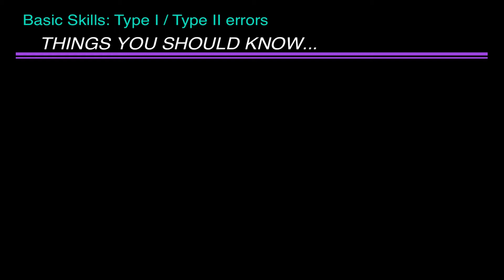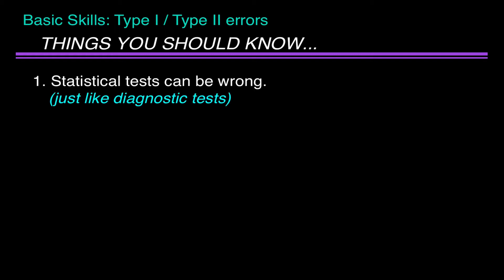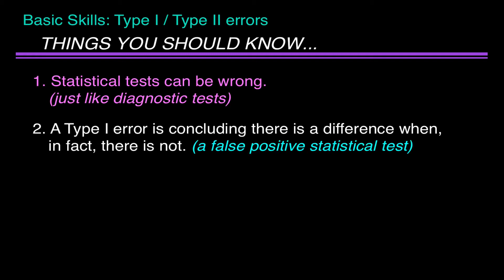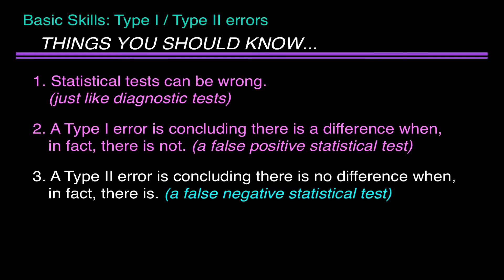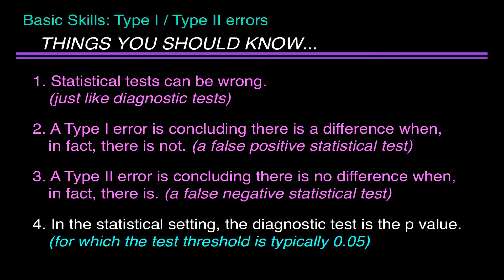Here's what you should know so far: 1. Statistical tests can be wrong, just like diagnostic tests. 2. A type 1 error is concluding there is a difference when in fact there is not — it is a false positive statistical test. 3. A type 2 error is concluding there is no difference when in fact there is — it's a false negative statistical test. And 4. In the statistical setting, the diagnostic test is the p-value, for which the test threshold is typically 0.05.